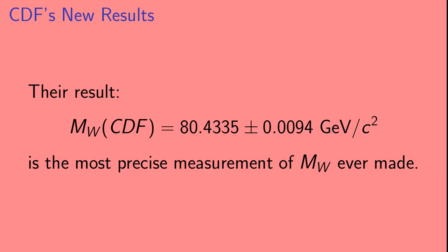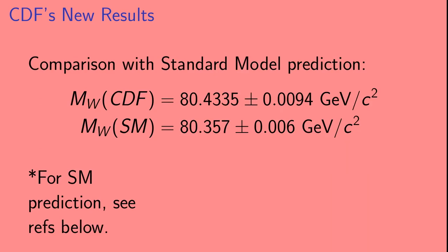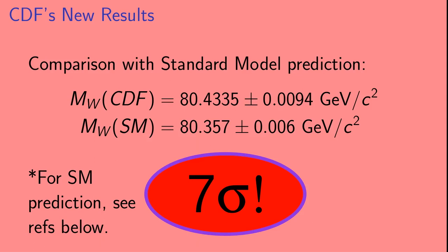Their experimental result is shown here. It is the most precise measurement of the W boson mass ever made. Let's take a look at how that compares with the standard model prediction, shown in the second line here. Even at a casual glance, we can see that the difference between these two numbers is quite a bit bigger than either of their error bars. In fact, it's a 7 sigma discrepancy.